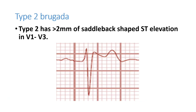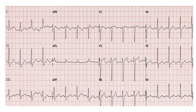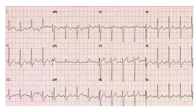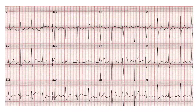Type 2 Brugada pattern has more than 2 mm of saddleback-type ST elevation in V1 to V3. Unlike Type 1 where the T wave is inverted, in Type 2 the ST elevation is saddleback type and the T wave is upright or slightly normal. On ECG, you see an R wave, then S wave, then a small R wave, then saddleback-type ST elevation with an upright T wave.